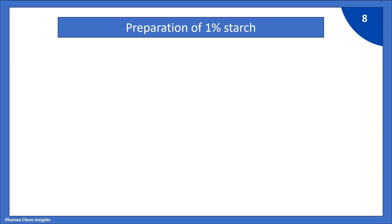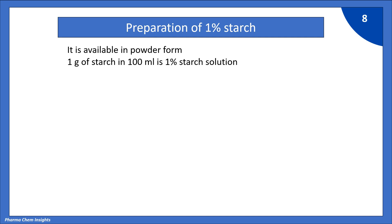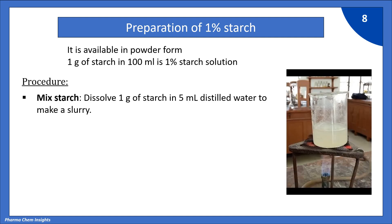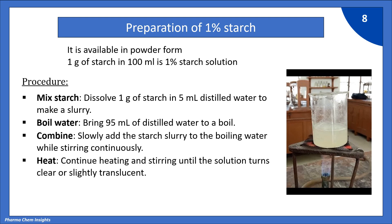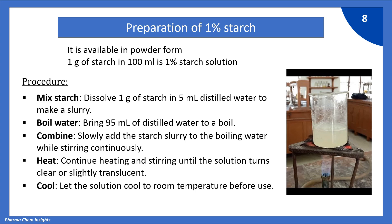We need a 1% starch solution as an indicator. Starch is available in powder form; 1 gram of starch in 100 ml gives a 1% starch solution. To prepare it: dissolve 1 gram of starch in 5 ml distilled water to make a slurry, bring 95 ml of distilled water to a boil, then slowly add the starch slurry while stirring continuously until the solution turns clear or slightly translucent. Let it cool to room temperature before use and store in a cool place.